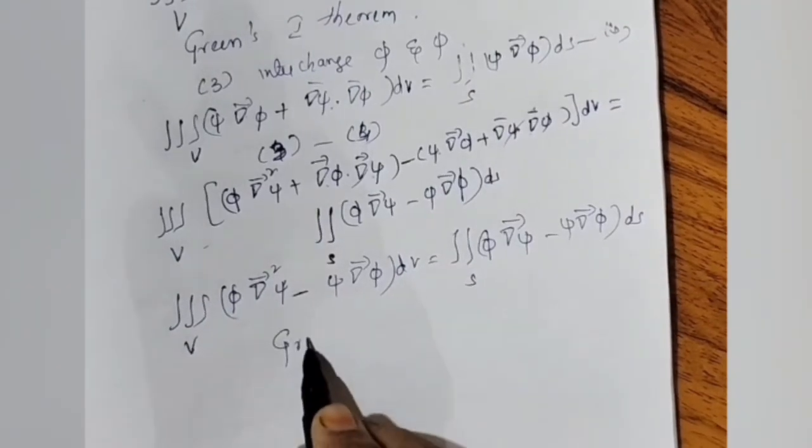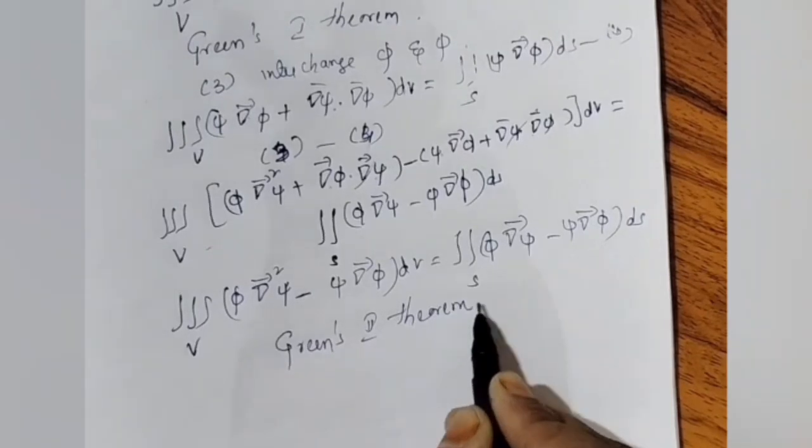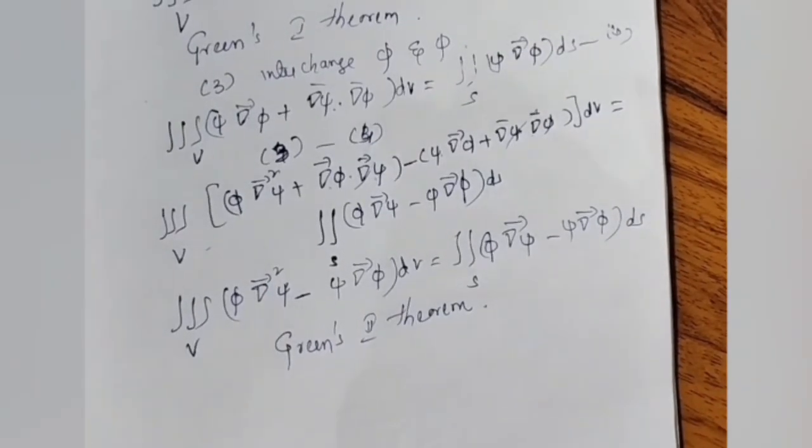Hope you understood. In my previous video, we discussed about Gauss divergence theorem. Now we have completed Stokes as well as Green's theorem. By this, we completed Vector Analysis Unit 1. Thank you for watching my videos — if you like them, share and subscribe. Bye.